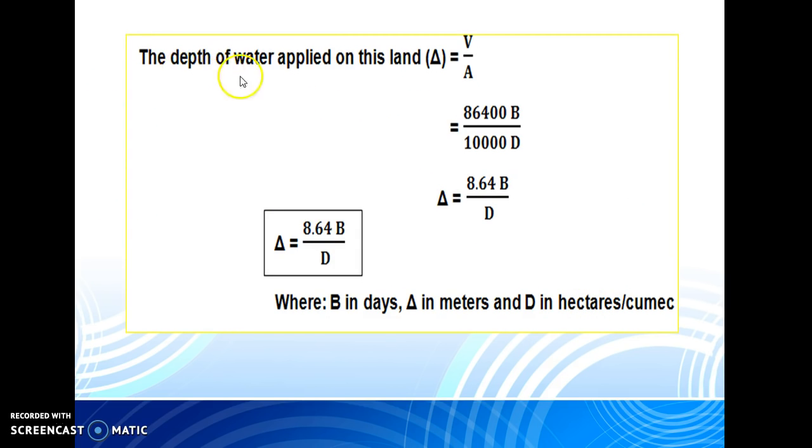Now, the depth of water applied on this land, that is equal to volume of water applied divided by area of land to be irrigated. That is equal to 86,400 times B divided by 10,000 D. By solving this, we can get delta equals 8.64 B by D. This is the required relationship between delta, B, and D.